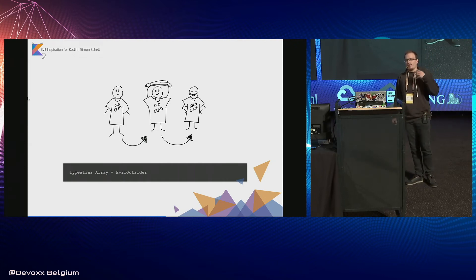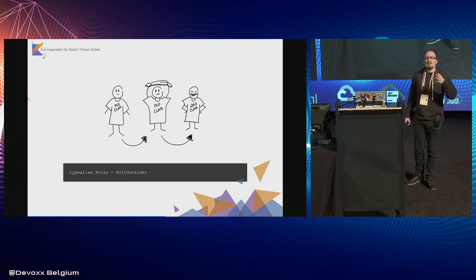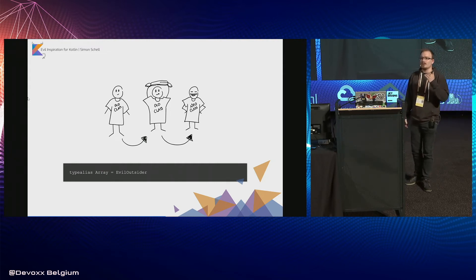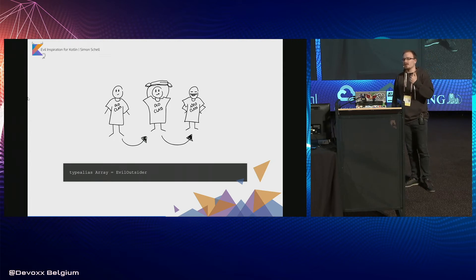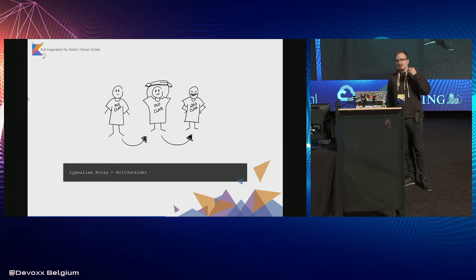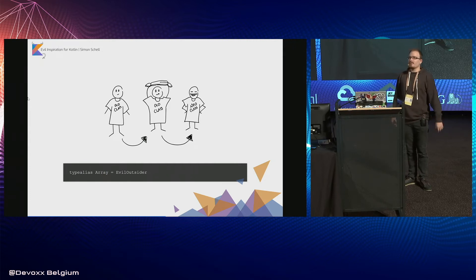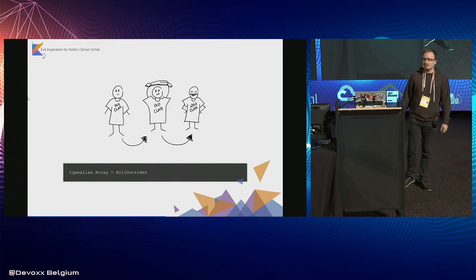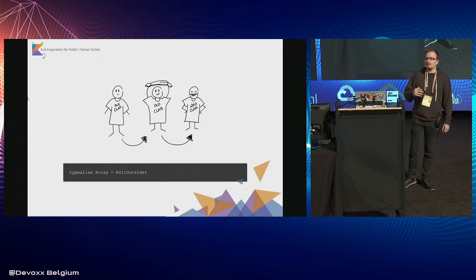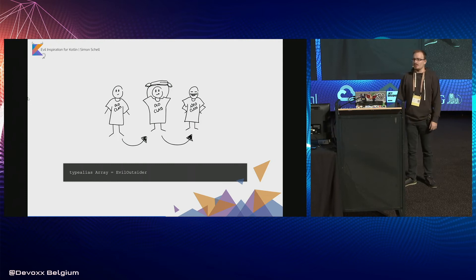And you might have already guessed where this is going. Of course, we can completely change the behavior of already written functionality with those type-aliased classes by simply acting as a delegator. But the type alias by itself is still not enough to really cause broken behavior because it only works in the scope we have defined it in. So we have to use something to change the scope.